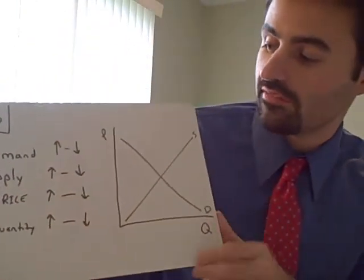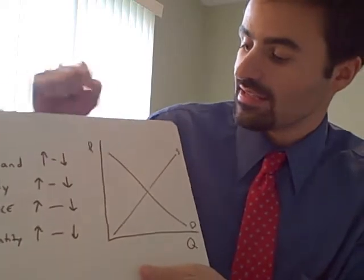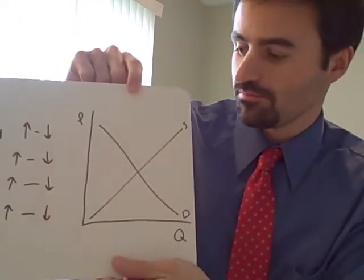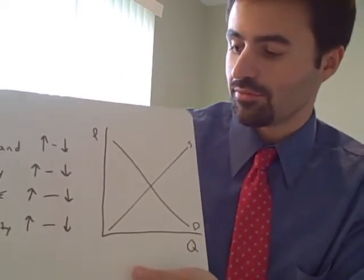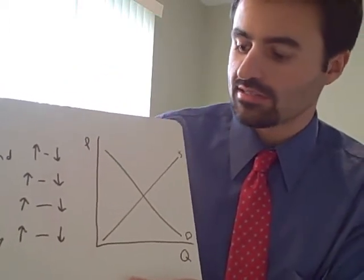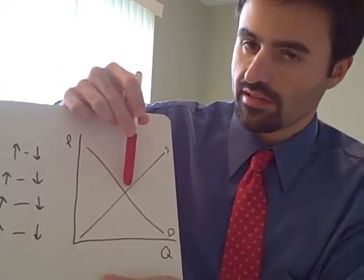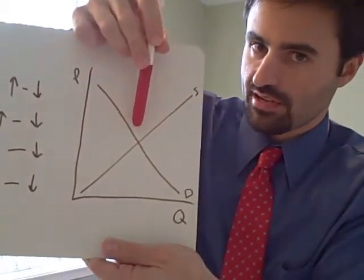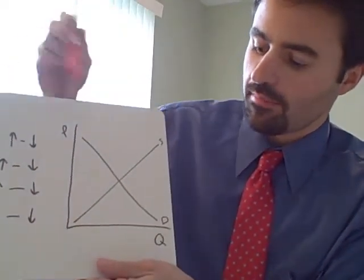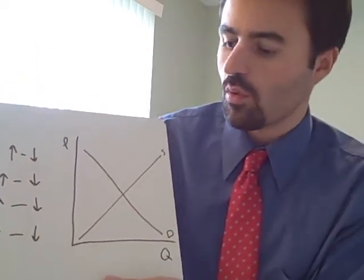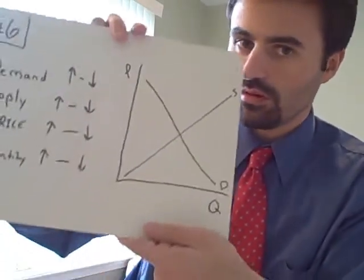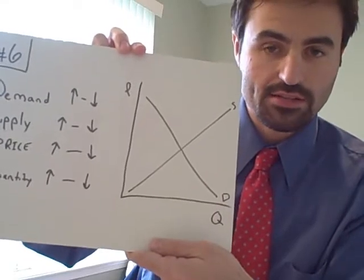We're looking at number six. I have my graph over here. Know that where your market price starts is right there where they intersect. And know your equilibrium quantity is going right down with that. Quantity is really important. We don't talk about quantity as much as we do price.